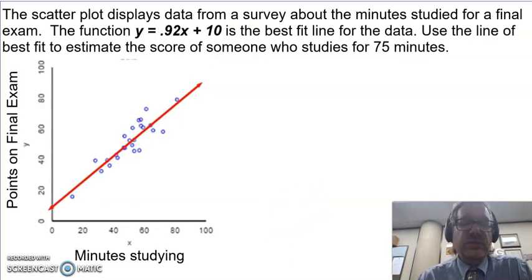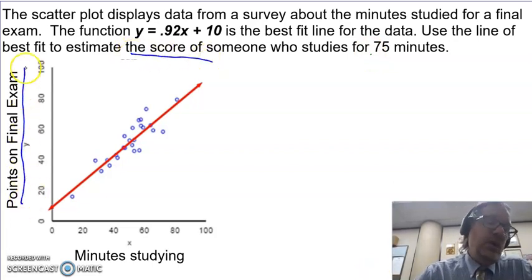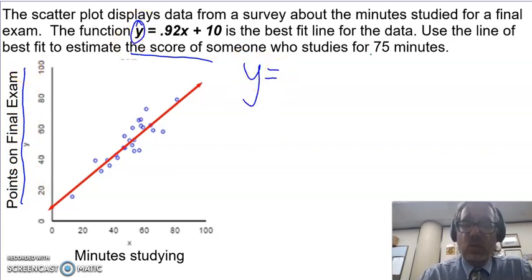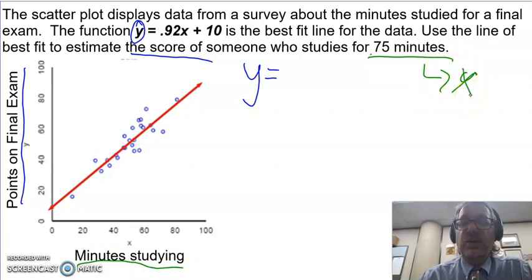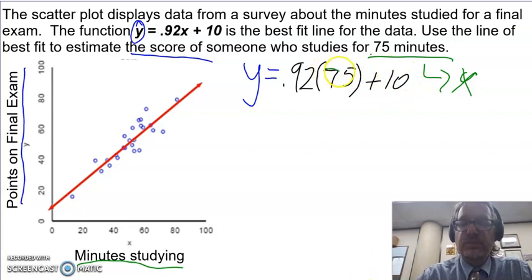So if we look at this, let's take a look at our line. So they give us both the scatter plot and they give us our equation, which is nice. So they give us our function y equals 0.92x plus 10. Where we are comparing minutes studying to our points on our final exam. So we want to use this line of best fit to estimate the score for someone who studies for 75 minutes. So what they want us to find is our score. Our score is our y value. That's what we are looking for. Or we are looking for y. What they gave us was minutes. Minutes is our x. We want to find y when we know x. So we know y equals 0.92x, which x is 75 minutes. Plus 10.